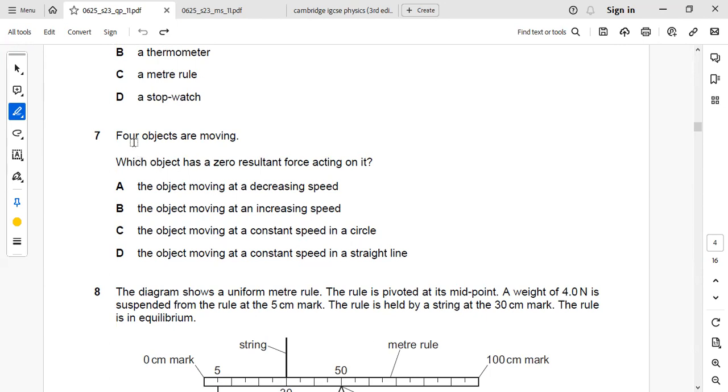The next question is four objects are moving. Which object has a zero resultant force acting on it? Always an object which is moving with a constant speed in a straight line will be having zero resultant force. One more condition is that an object at rest or moving at a constant speed in a straight line will have zero resultant force. So the answer is D.